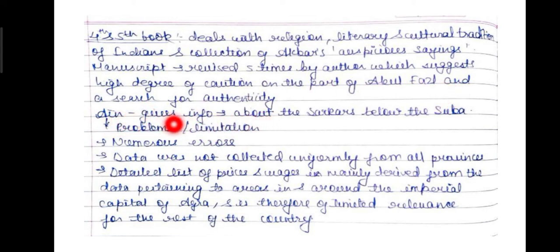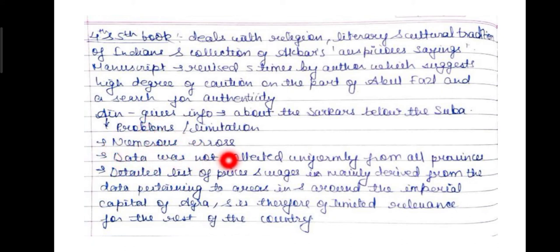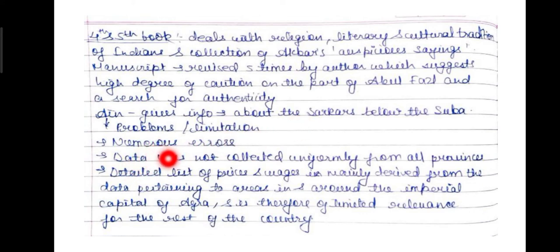The Ain-i-Akbari gives information about the government below the subas, but there were some limitations. There were numerous errors, and data was not collected uniformly from all provinces. The detailed list of prices and wages is mainly derived from data pertaining to areas around the imperial capital of Agra.